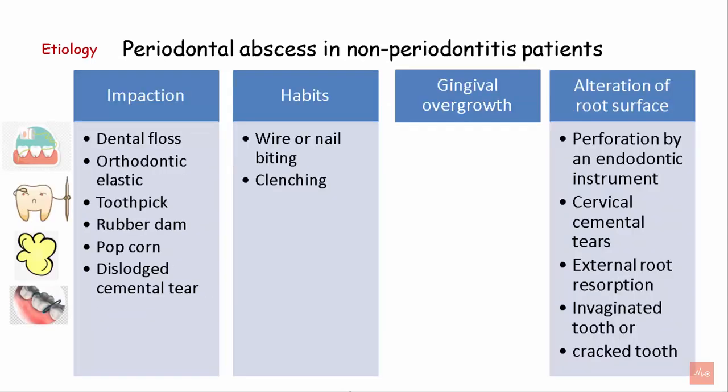In non-periodontitis patients, periodontal abscess can occur due to impaction of dental floss, orthodontic elastic, toothpick, rubber dam, popcorn, or a dislodged cemental tear. Certain habits like wire or nail biting or clenching can also lead to development of periodontal abscess. Gingival overgrowth can lead to plaque accumulation and ultimately periodontal abscess.